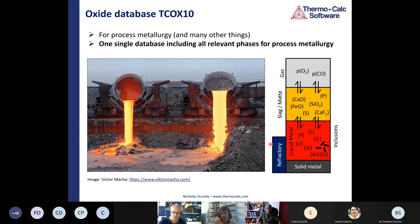And then we have solid oxides, which could be the refractory material, but solid oxides can also be solid non-metallic inclusions in the liquid steel. And then there's a gas phase, because process metallurgy mostly involves blowing some sort of a gas onto the steel, or through the steel, or into the steel.